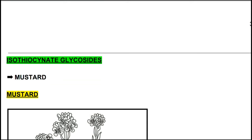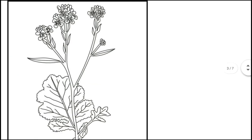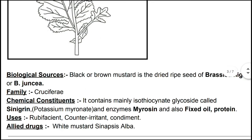The next class is isothiocyanate glycosides, of which mustard is the primary example. The biological source is the black and brown mustard seeds of Brassica nigra and Brassica juncea — dried ripe seeds. The family is Brassicaceae. The chemical constituents include mainly the glycoside sinigrin (potassium myronate) and the enzyme myrosinase, along with fixed oil and protein.